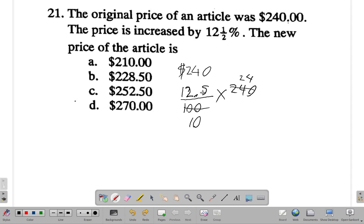We can say 2 into 10 is 5. 2 into 24 is 12. What is 12 times 12.5? Remember, it's 12 times 12 plus 0.5. 12 times 12 is 144 plus 12 by half. Half of 12 is 6. 144 plus 6 is 150.